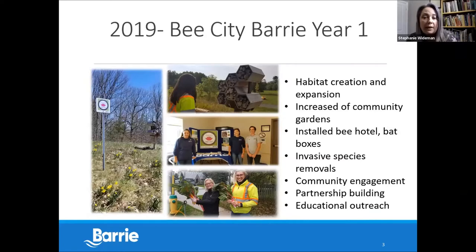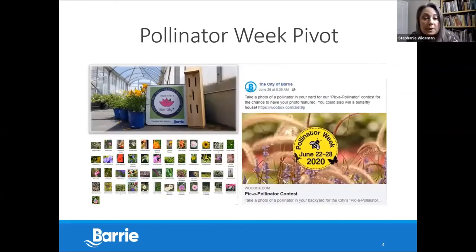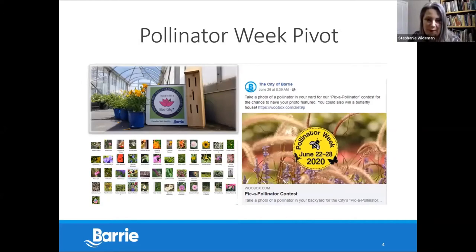Projects in the first year included shoreline restoration, conversion of annuals to native plants, and expansion of naturalized areas. Building relationships and increasing educational outreach with residents, businesses, and community organizations was a huge building block. COVID paused most Bee City work but they held an online photo contest where residents submitted photos of pollinators — the winner received tickets to a butterfly house. This became their first virtual event and will remain a component going forward. They got a great response and built an excellent catalog of photos.